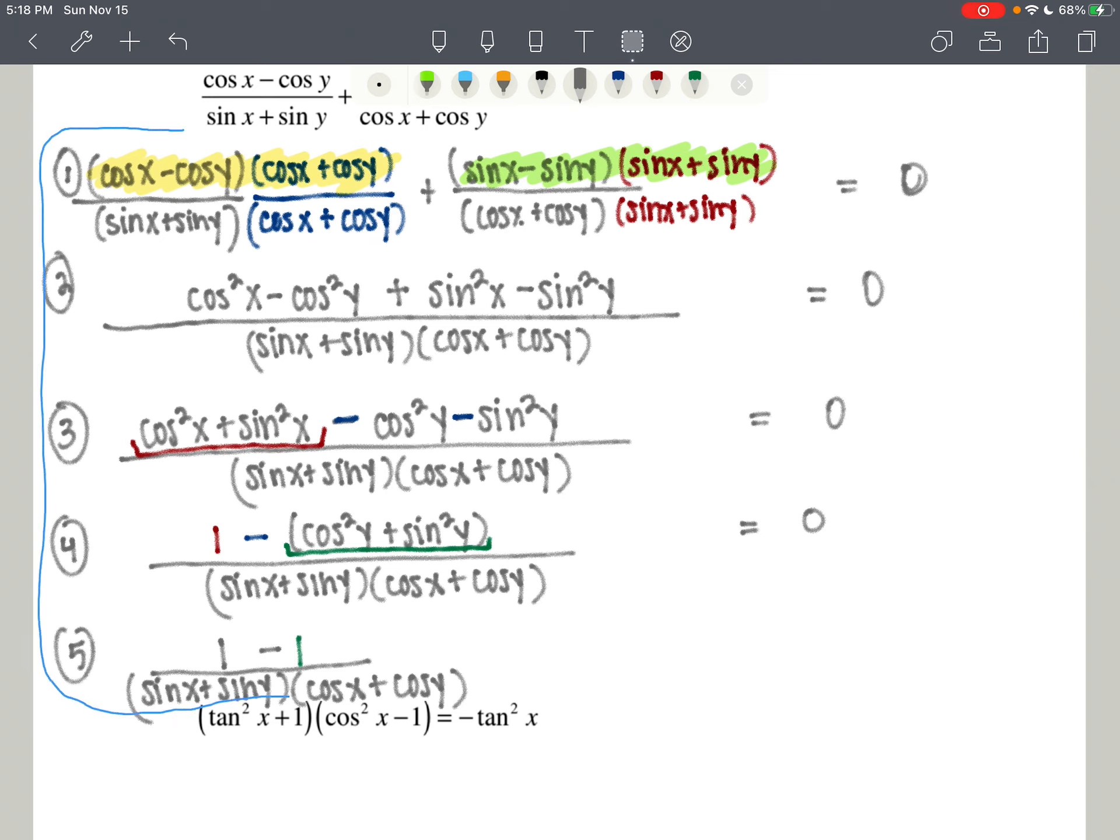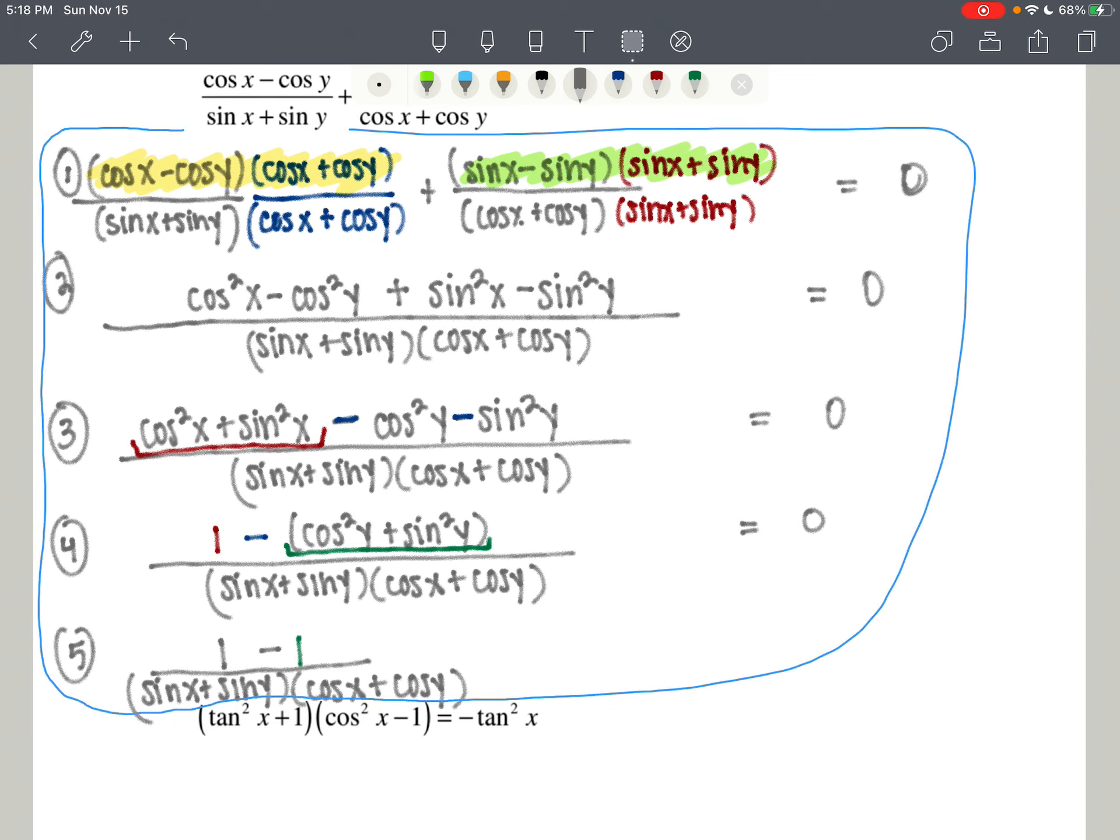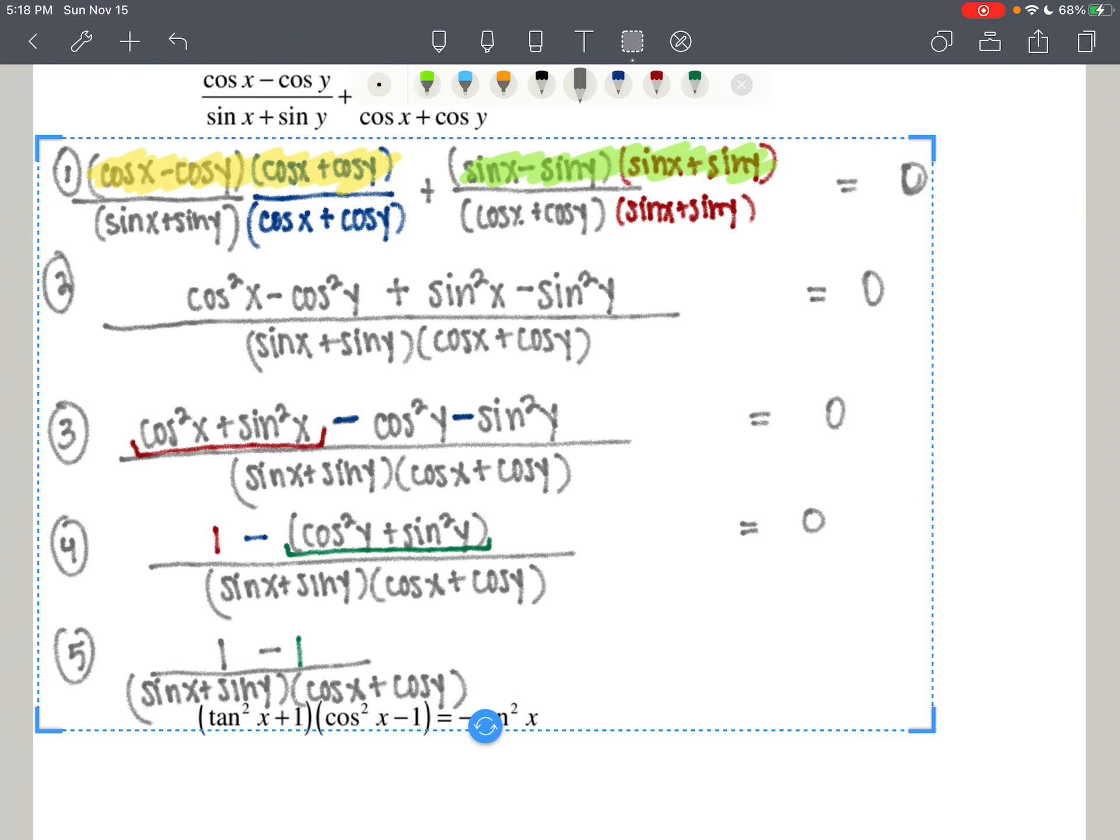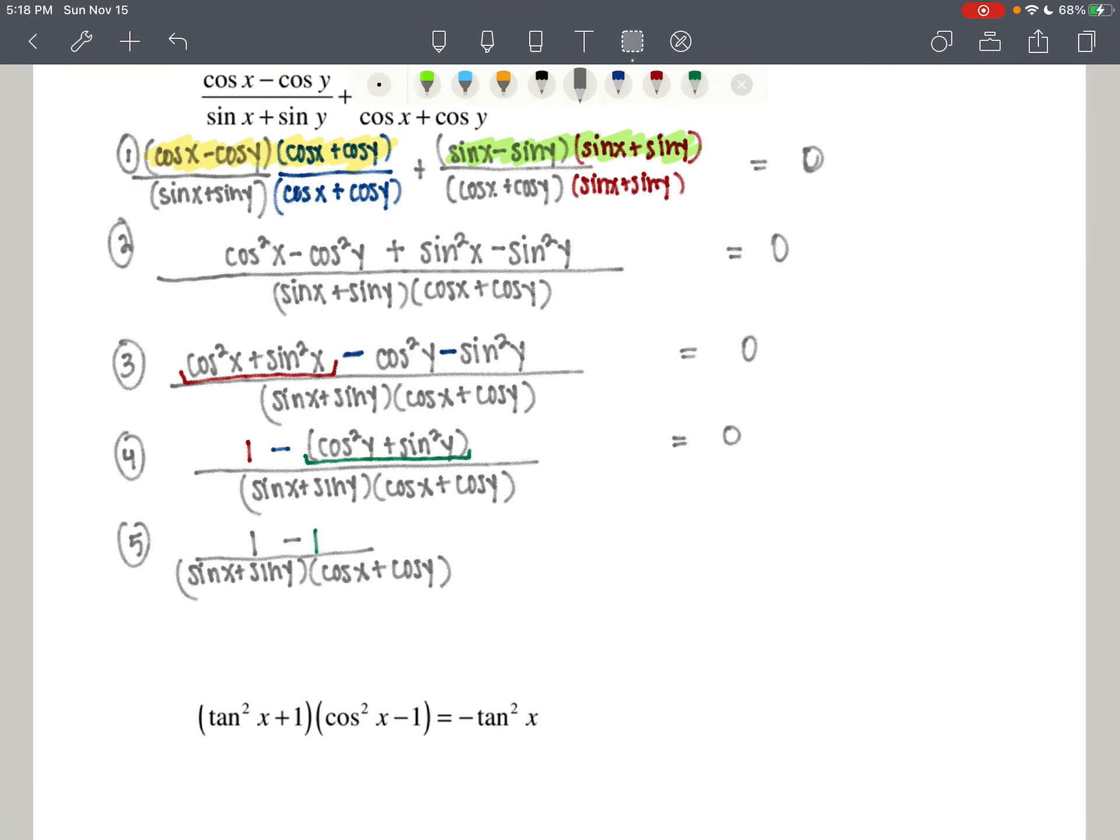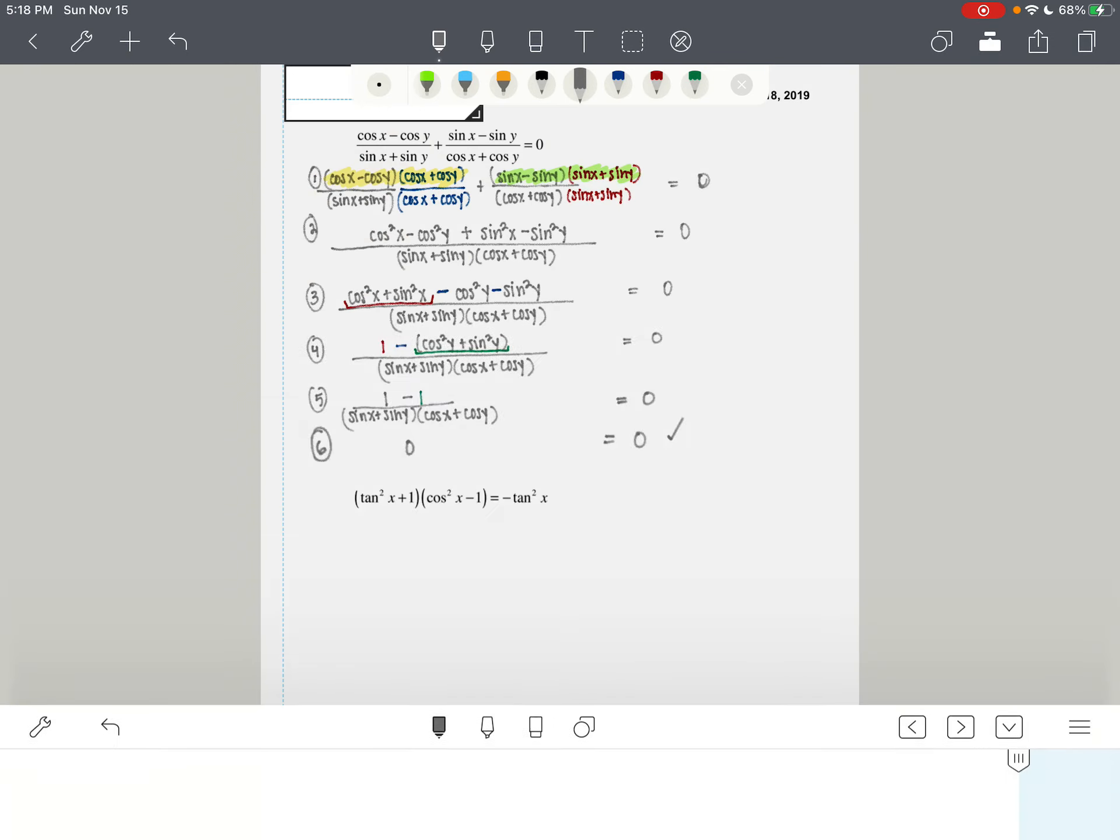So while you're catching up, I'm going to resize this and give myself a little bit more room, because it is important that we write these last steps. You can't just stop short. Zero over anything is zero. So zero over any denominator other than zero is zero.